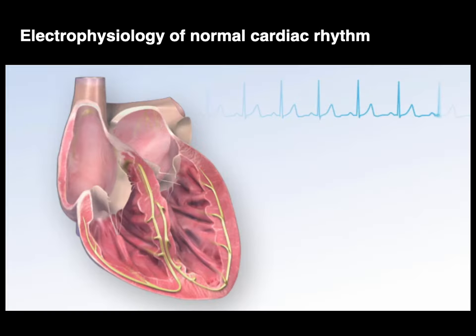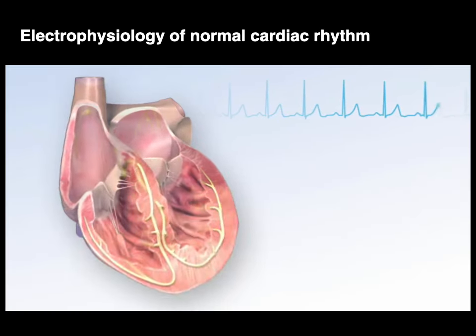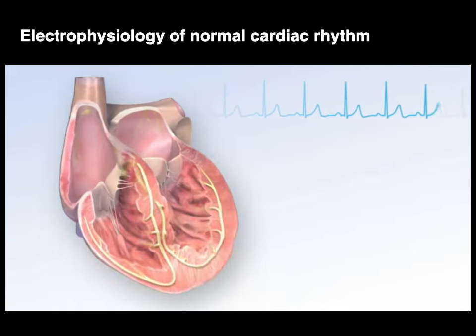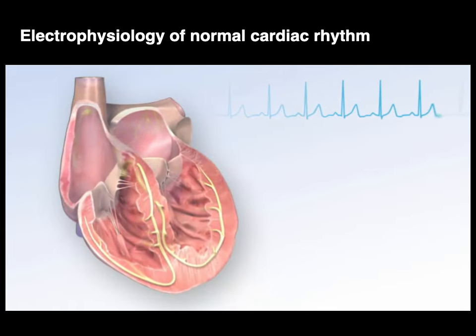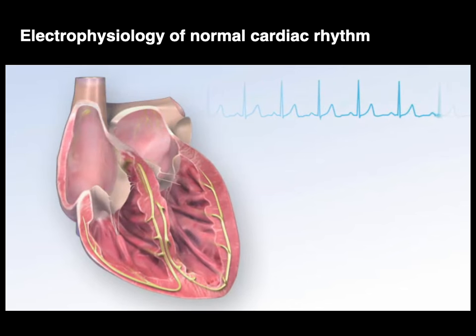The electrical physiology of a normal cardiac rhythm shows it just firing repeatedly, spreading through the atria and ventricles, with the SA node, AV node, bundle of His, and bundle branches helping to spread it quickly so the muscle cells can contract.